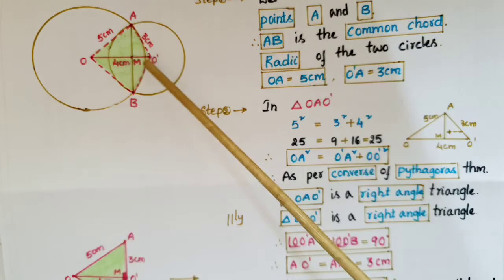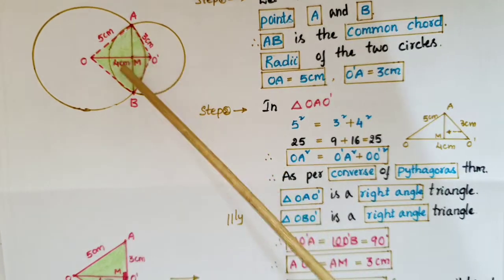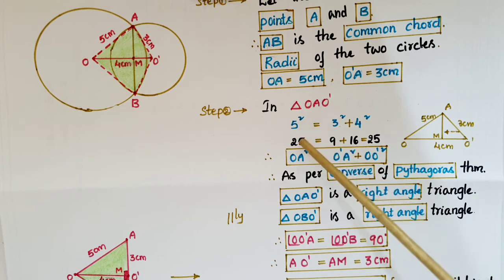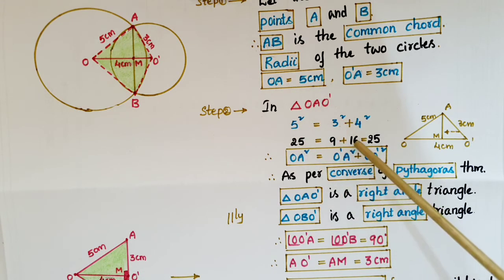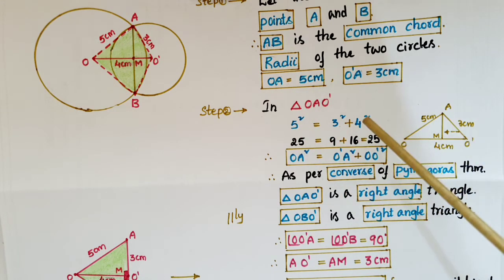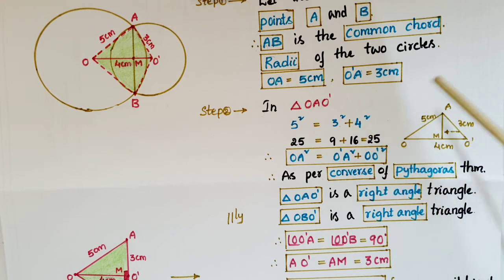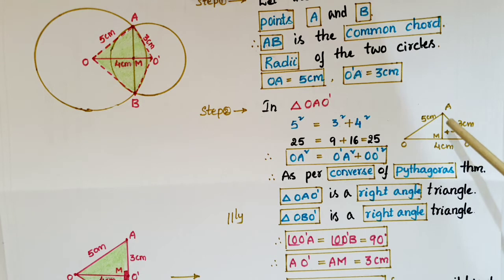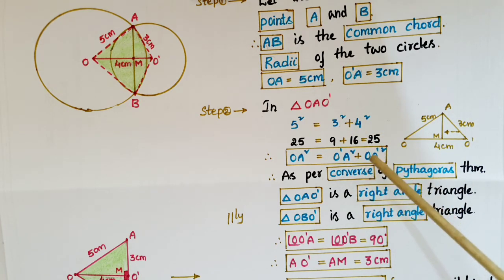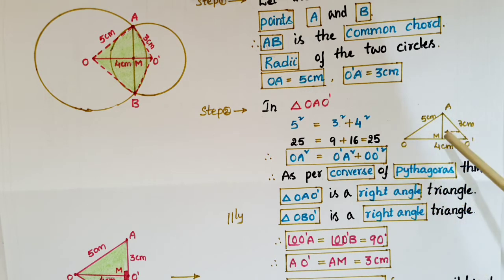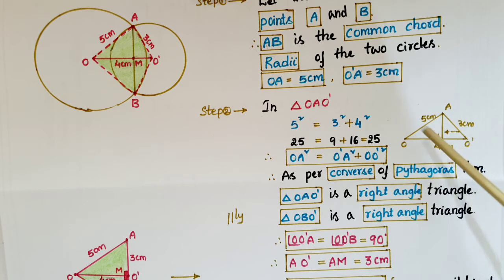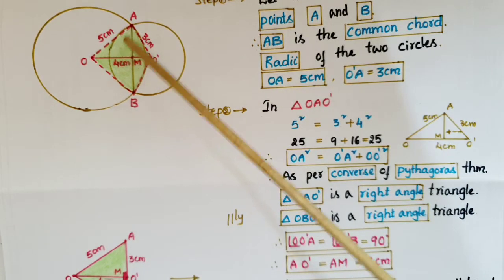Now if you take triangle OAO', we have 5 squared equal to 3 squared plus 4 squared, that is 25 equals 9 plus 16, which is 25. We know that if in a triangle one side squared is equal to the sum of squares of the other two sides, then as per the converse of Pythagoras' theorem we can say it is a right angle triangle. So triangle OAO' is a right angle triangle, with the right angle at A.